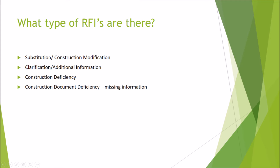The next type is for clarification or additional information. This is found during the construction phase when something needs more information to complete the construction. The next RFI is the construction deficiency RFI. This is something in the design that just doesn't work, like the soil not being hard enough to put down the subgrade.